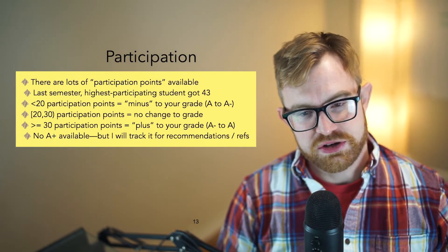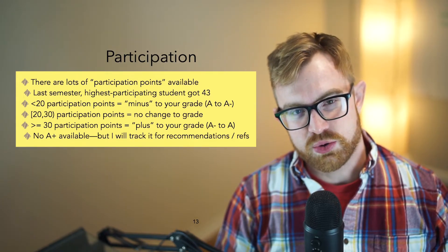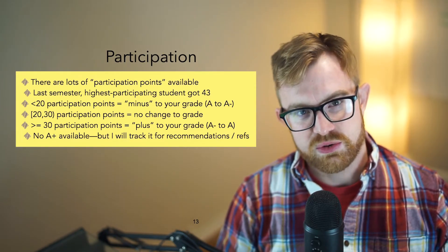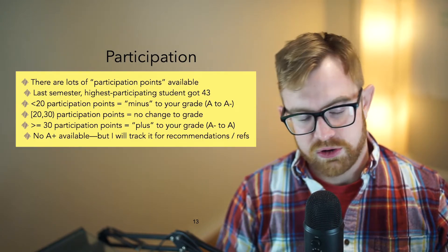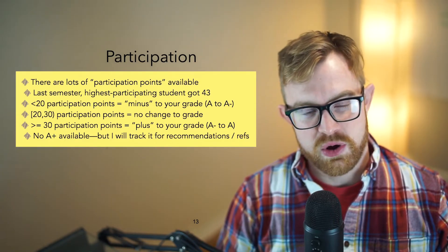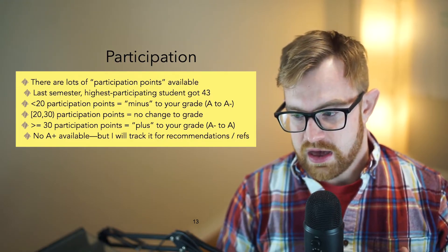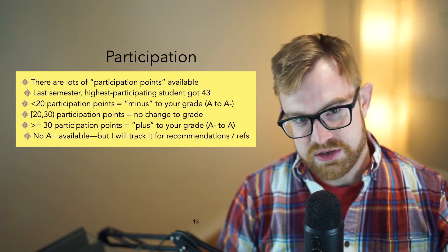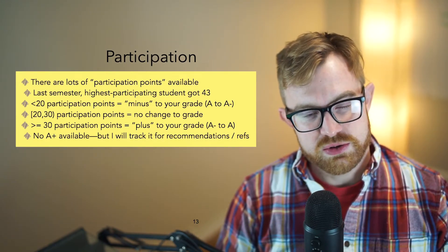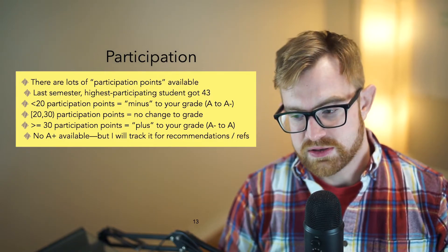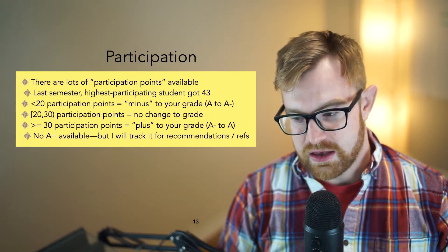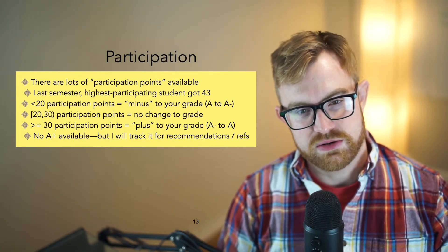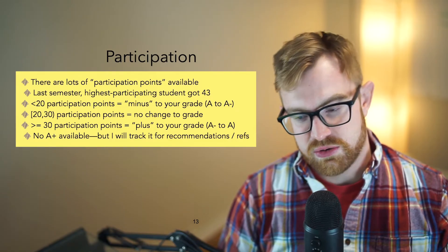Now, there are also these things called participation points. There's going to be a participation point awarded for every time you score greater than or equal to 50 percent on a participation quiz. So if there are two questions on the participation quiz about the video, generally they're multiple choice questions that are hopefully not too hard. As long as you get one or two of those right, you'll get a participation point. And if you get fewer than 20 of these participation points, and remember, there's at least one per lecture, there are a few other ways to get them in the syllabus that you can read as well. But if you get less than 20 of them, you get a minus applied to your grade. So if you did get an A, you now get an A minus if you have fewer than 20 participation points. If you have between 20 and 30 participation points, then you'll have no change to your grade. But if you get greater than or equal to 30 participation points, you'll actually get a plus.